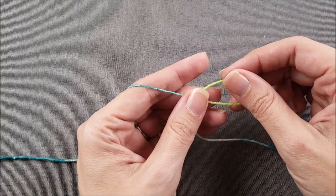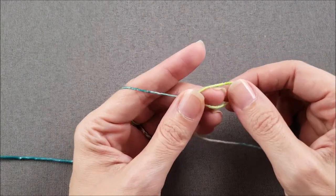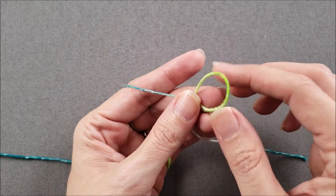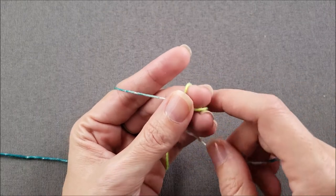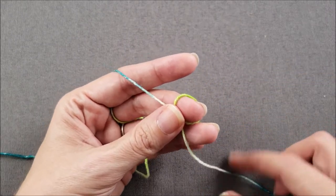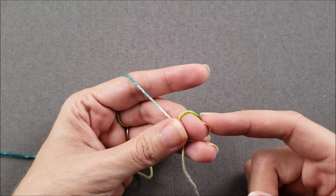Then pinch where the yarns cross and it can also be helpful to actually just loop that ring right over your middle finger and then you can pull the yarn tail to tighten up the loop just a little bit and this just helps so that the ring isn't flopping around as you're working.